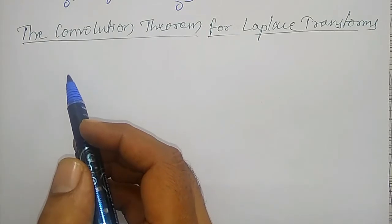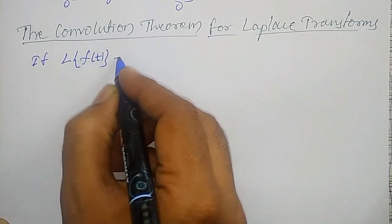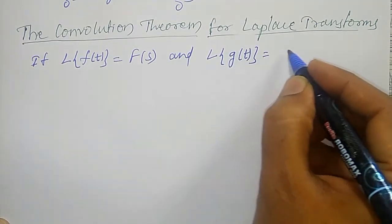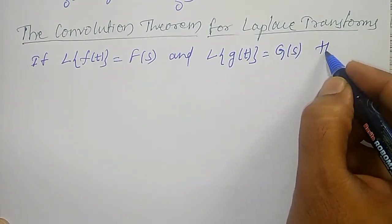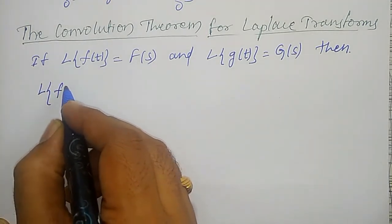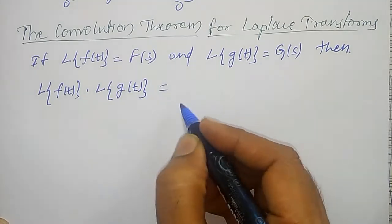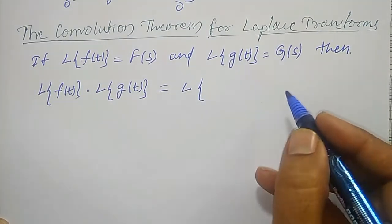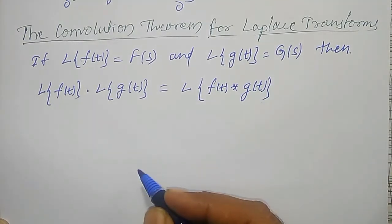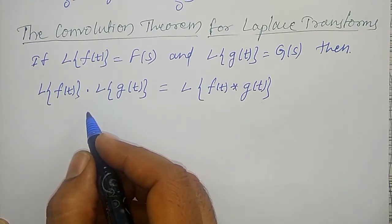The convolution theorem for Laplace transform: if the Laplace transform of f of t is equal to capital F of s, and the Laplace transform of g of t is equal to capital G of s, then the Laplace transform of f of t into the Laplace transform of g of t is equal to the Laplace transform of the convolution of two functions f of t asterisk g of t. This is one form of the convolution theorem.